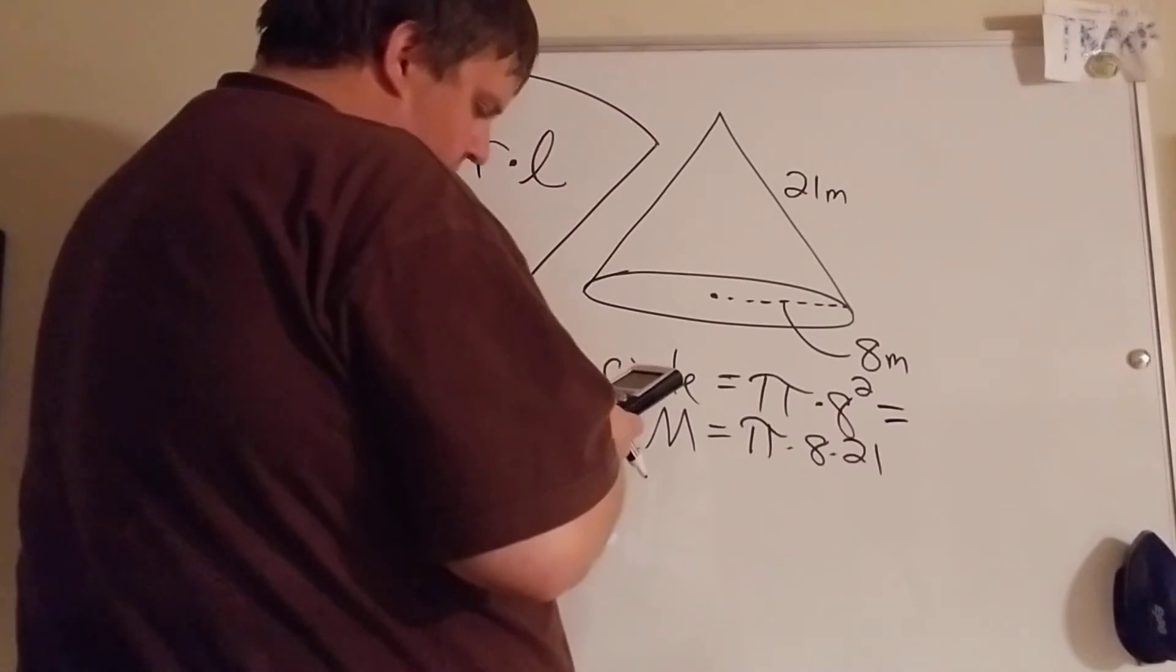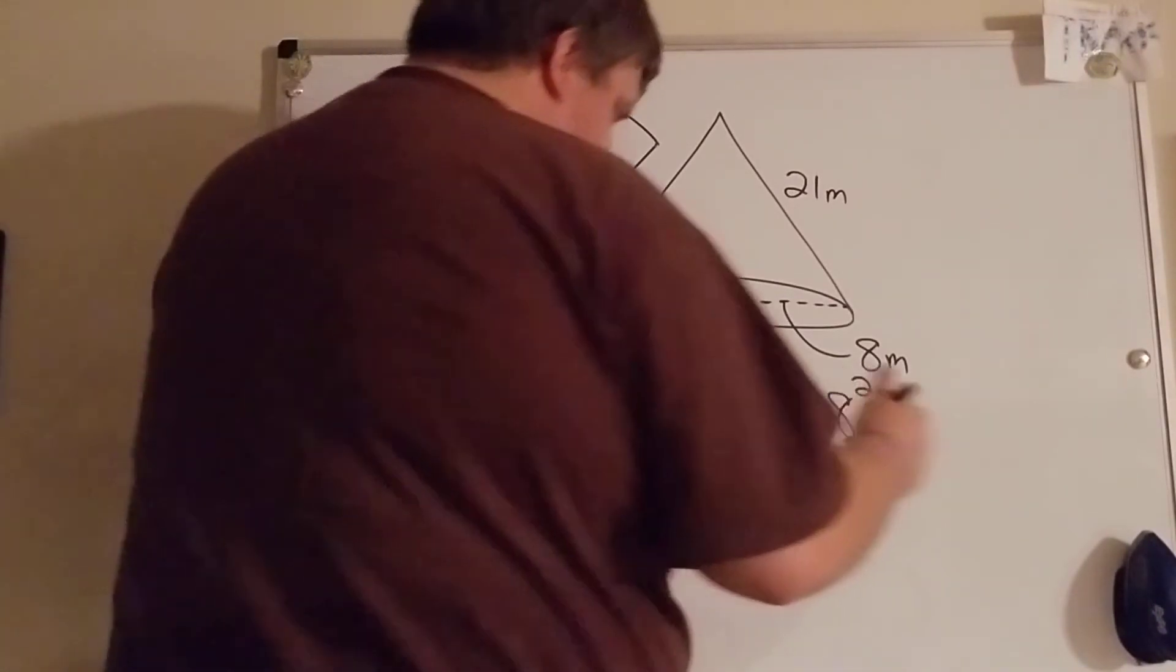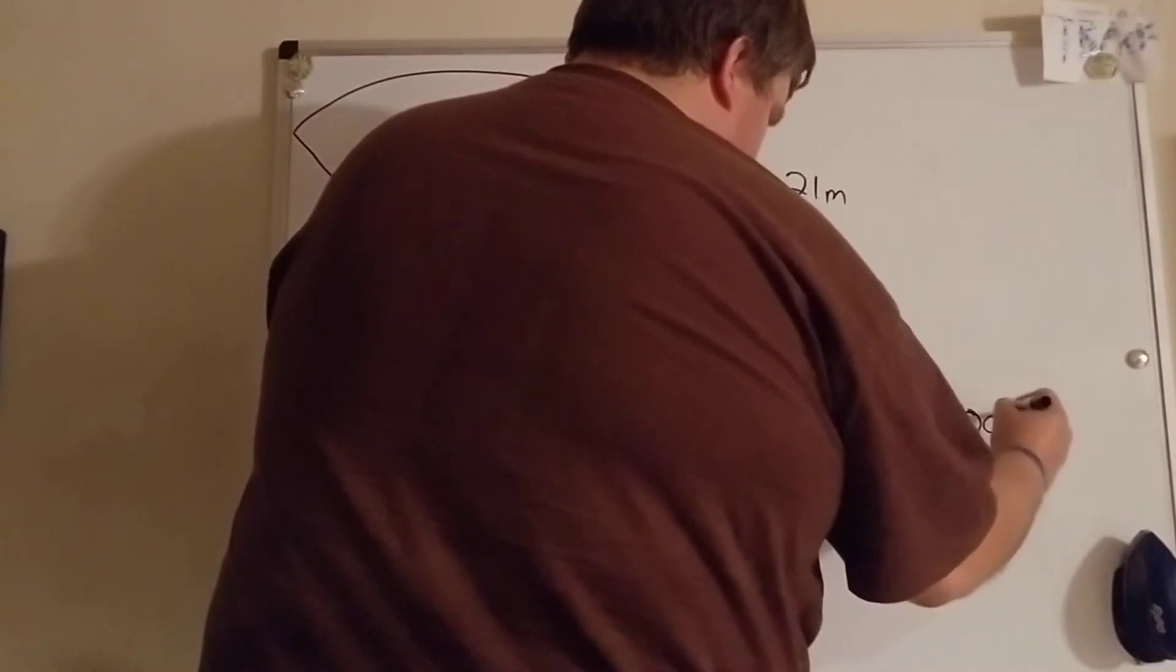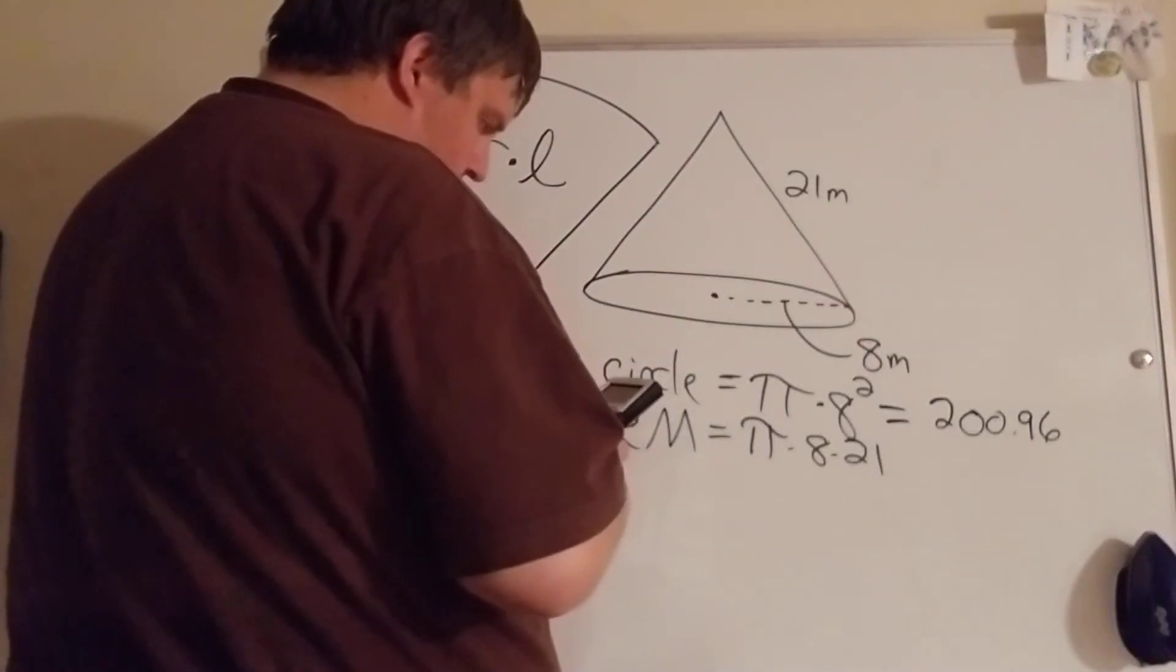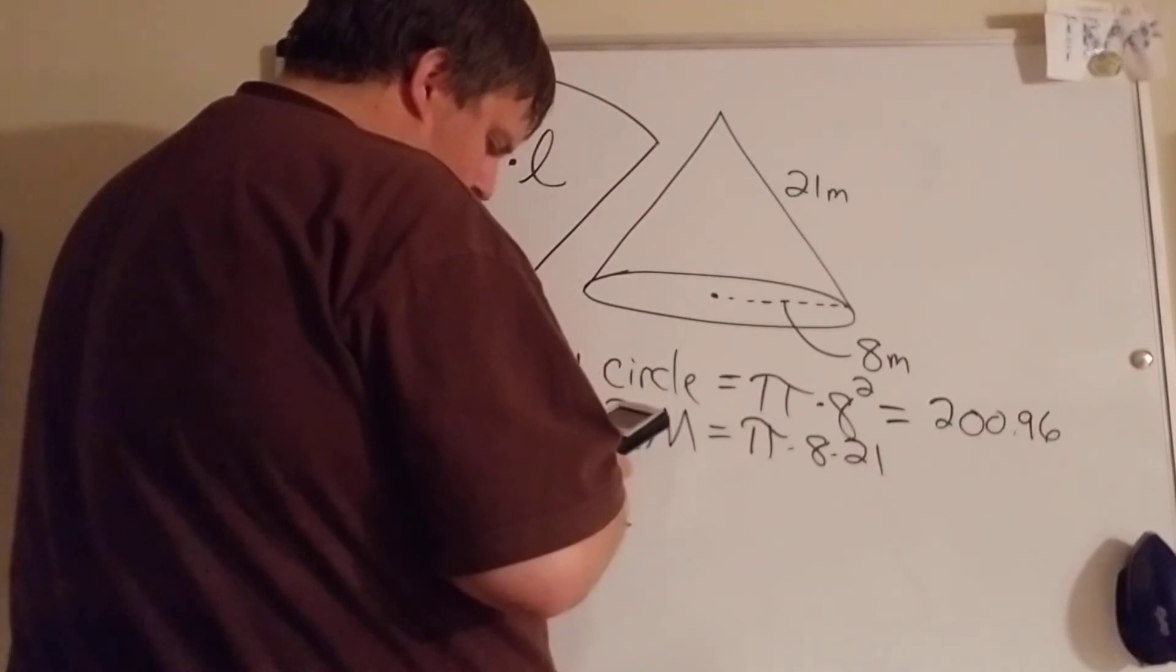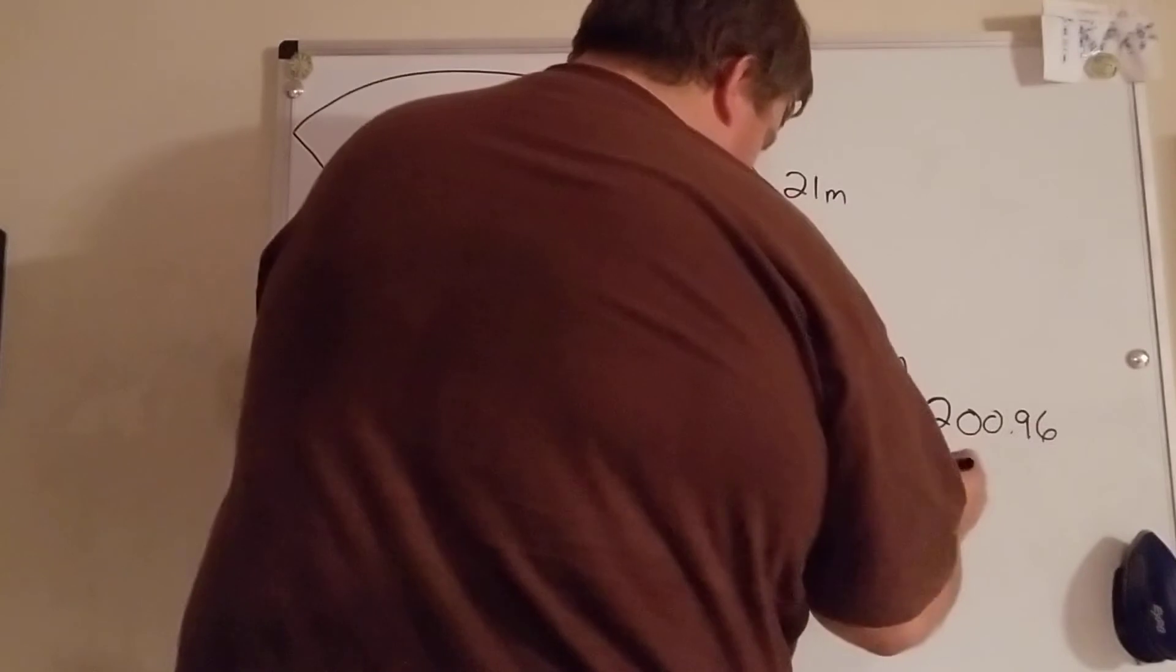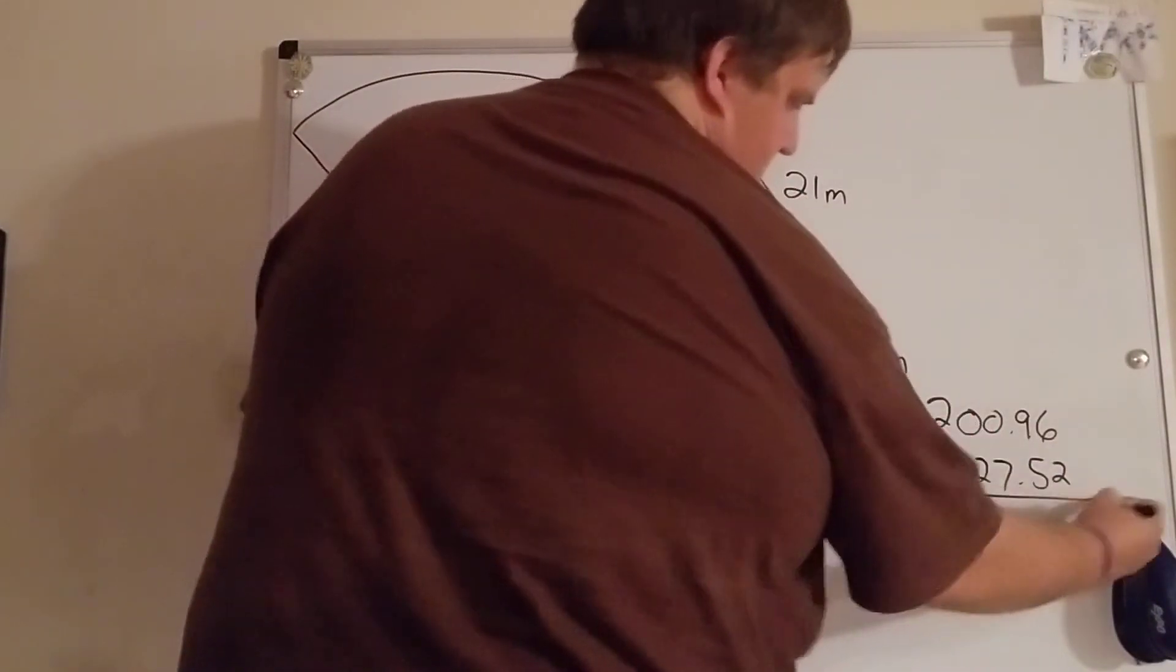So a little bit of math. 8 times 8 times pi gives me 200.96, and then 3.14 times 8 times 21, and I get 527.52. And I just add those up.